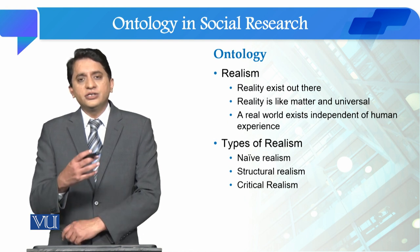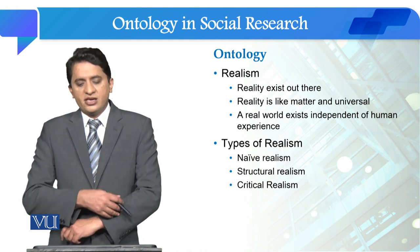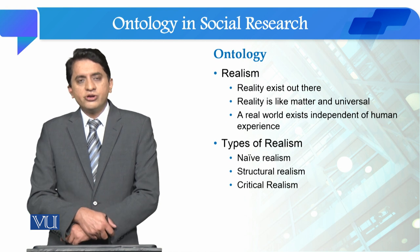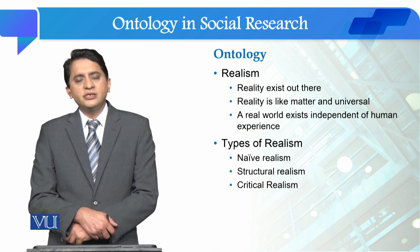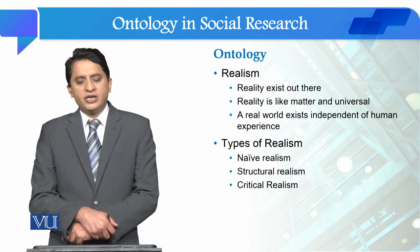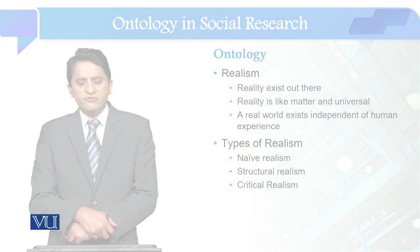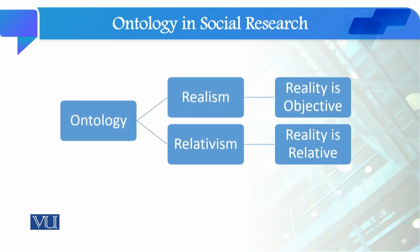In realism there are three types: naive realism, structural realism, and critical realism. Now we were talking about what realism is as an ontology, so its contradictory ontology is relativism.